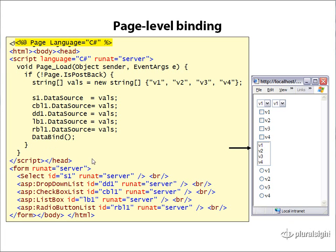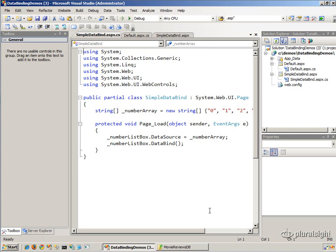Another possibility: instead of calling DataBind directly on each control, you can call it once on the page. By calling DataBind at the top-level page, it will recursively call DataBind on all controls that have a DataBind method on that page. You probably won't find this useful that often, because usually your data binding is very specific and time-sensitive — if you have a data reader prepared and ready to stream data, you need to bind at that time. But if you have static data sources like arrays, you can set data sources on multiple controls and then place a single top-level call to DataBind on the page.